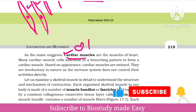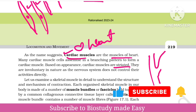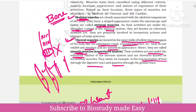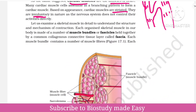Next, cardiac muscles: as the name says, cardiac is related to the heart. The muscles of the heart are called cardiac muscles. They are striated but also branched. They are involuntary — not under our control. The heart keeps beating; the muscles keep contracting. It is involuntary in nature. So three types of muscles — very important — note this.